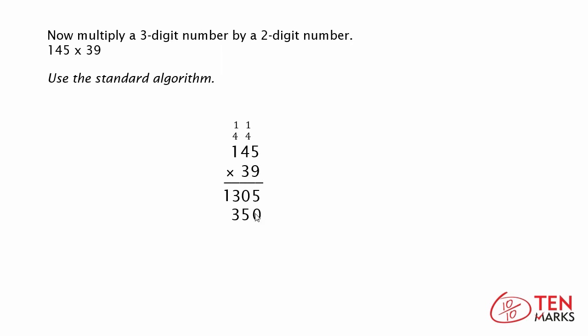Now that you have your two products you need to add your partial products. 5 plus 0 is 5, 0 plus 5 is 5, 3 plus 3 is 6, and 1 plus 4 is 5.